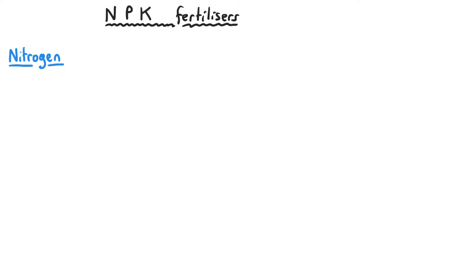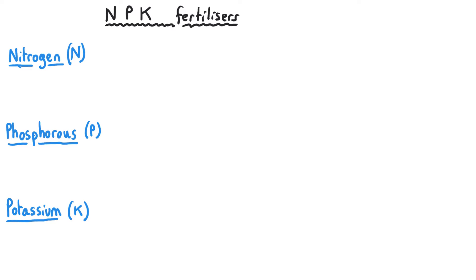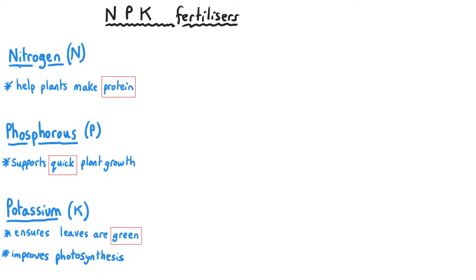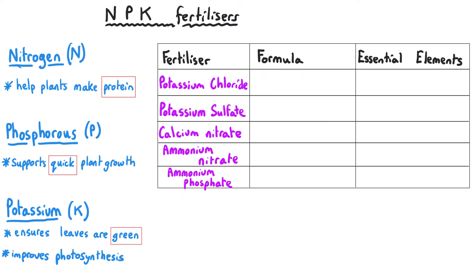The three main essential elements to help plants to grow are nitrogen, phosphorus, and potassium. Nitrogen is used by plants to make proteins. Phosphorus is used to help plants to grow quickly. Potassium helps plants to have healthy leaves and to make sure the leaves are very green and don't turn brown, which would impact on their ability to carry out photosynthesis.